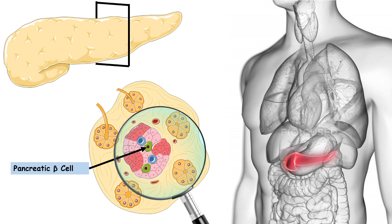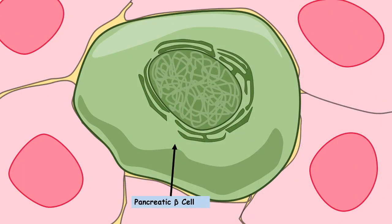Pancreatic beta cells are very few in number compared to the other cell types present. The pancreatic beta cell has a specific gene expression pattern — it expresses the INS1 gene, which is located at the chromosome 11p15.5 locus. This gene encodes for insulin, which is a proteinaceous hormone.